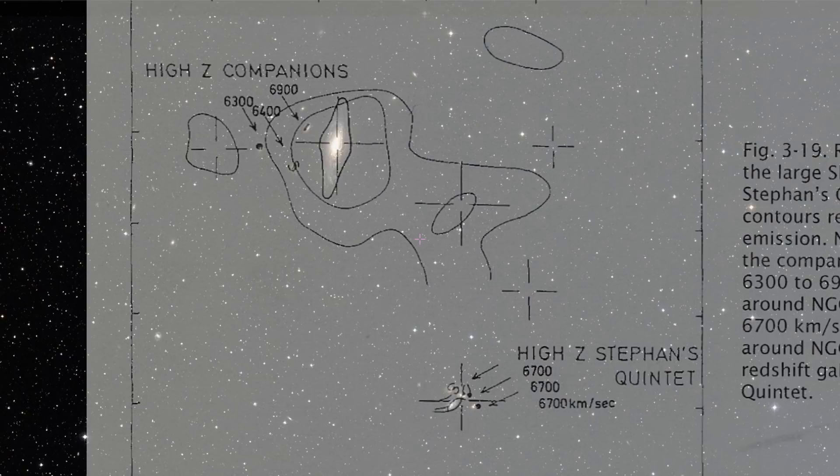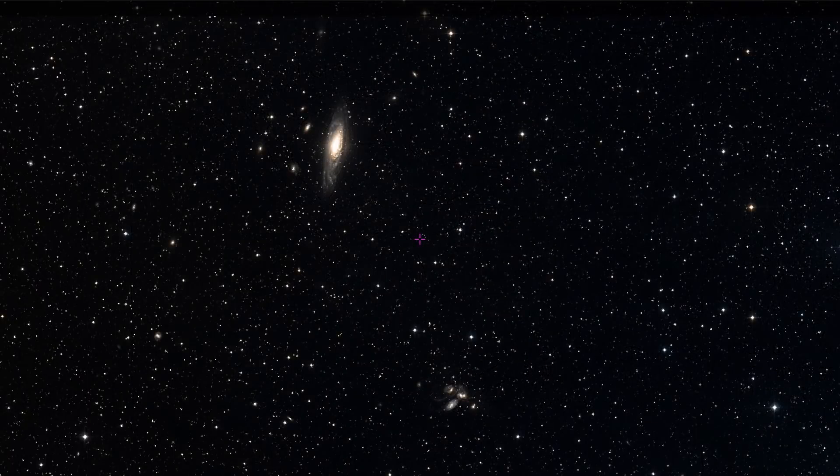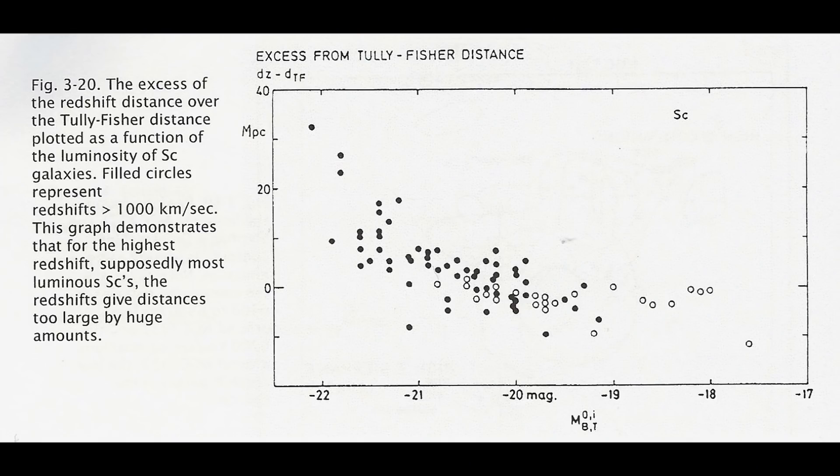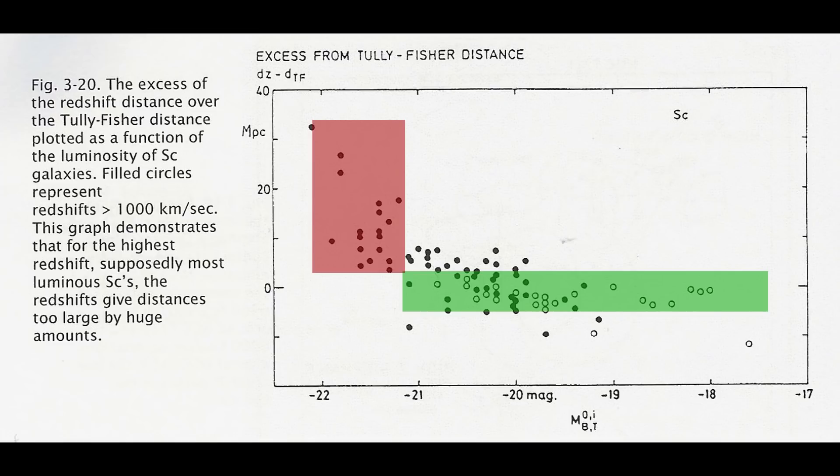Now there is an alternative method for calculating distance to galaxies called the Tully-Fisher method. When we compare the redshift distance with the Tully-Fisher distance and plot them on a graph it immediately becomes obvious that they agree very well for normal spiral galaxies. But for the high luminosity spirals the redshift distance is too great by up to 40 megaparsecs. And this problem means that not only are we assuming it is too far away and therefore it must be brighter but also that the galaxy itself is much too large.